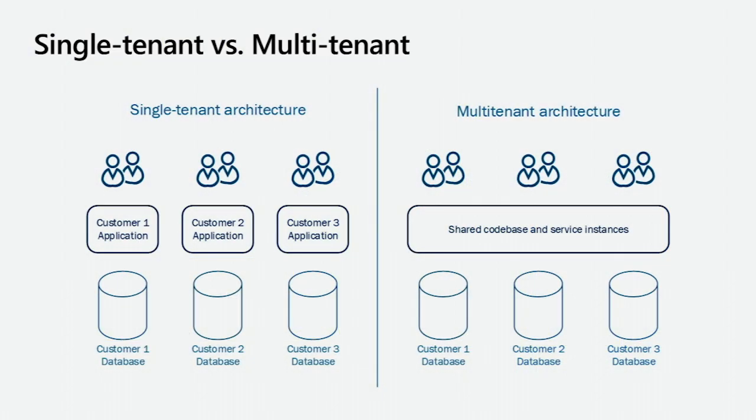Here is an illustration showing how it looks with a single tenant versus multi-tenant architecture. In a single-tenant world, we have one application deployment per customer, and they all have their own databases. In a multi-tenant architecture, we have a shared code base and shared service instances, but we usually still keep databases separate. This is really a matter of deployment, and that's the next topic — how to host multi-tenant applications. I'll go through this higher-level theoretical part before getting hands dirty with bits and bytes.